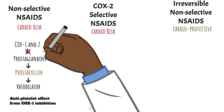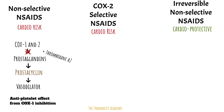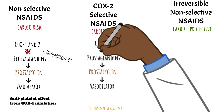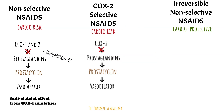Remember, thromboxane is also made when arachidonic acid is converted through COX-1. Thromboxane normally promotes platelet activation. Because of this, the non-selectives may have a lower cardiovascular risk compared to the COX-2 selectives, which only inhibit the COX-2 enzyme. Because there is no COX-1 inhibition with COX-2 selectives, there will be no inhibition of thromboxane formation, putting patients at higher risk for cardiovascular or cerebrovascular events.